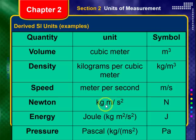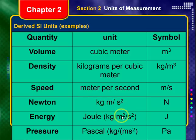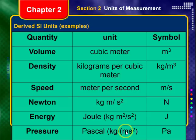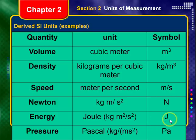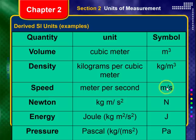We have more advanced units we'll use in the future. The Newton — represented by capital N — is kilograms times meters divided by seconds squared. The Joule is a unit of energy: kilograms times meters squared divided by seconds squared. The Pascal is kilograms divided by meters times seconds squared. All of these units are derived by multiplying together base units.